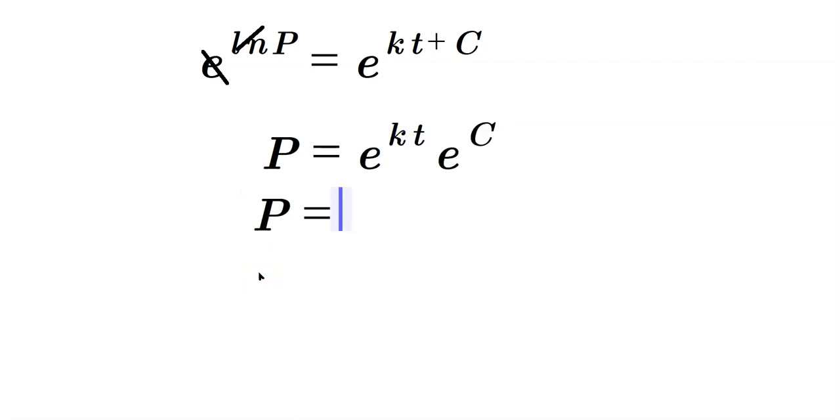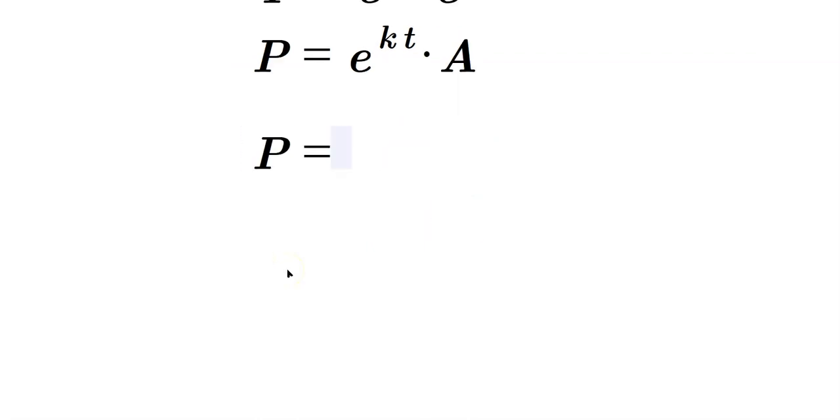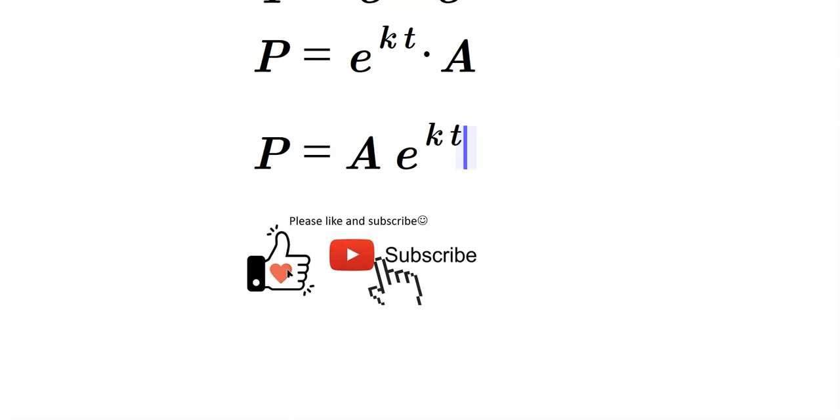In other words, our solution is P equals e to the kt times A. And conventionally, we write P equals A times e raised to the kt. That's the solution to the differential equation.